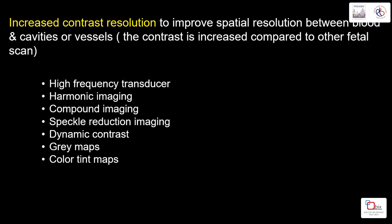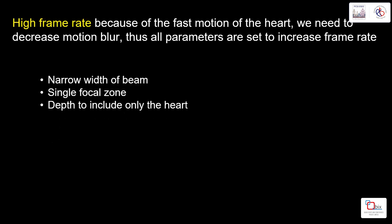The parameters used include high-frequency transducer, harmonic, compound and spatial reduction imaging (SRI), and dynamic contrast. For fetal echo we usually use dynamic contrast at eight or nine, while for other fetal organs we use around six or seven. We can use the gray map for better contrast, and the color tint if preferred.